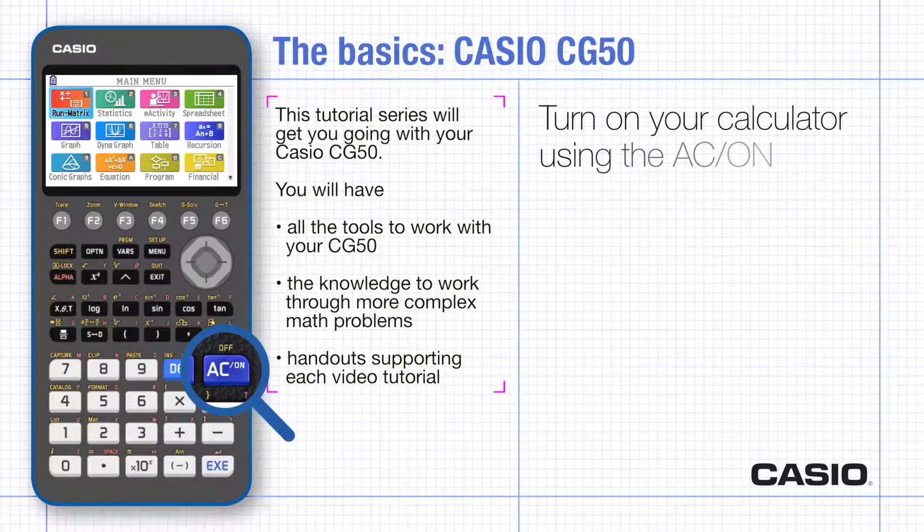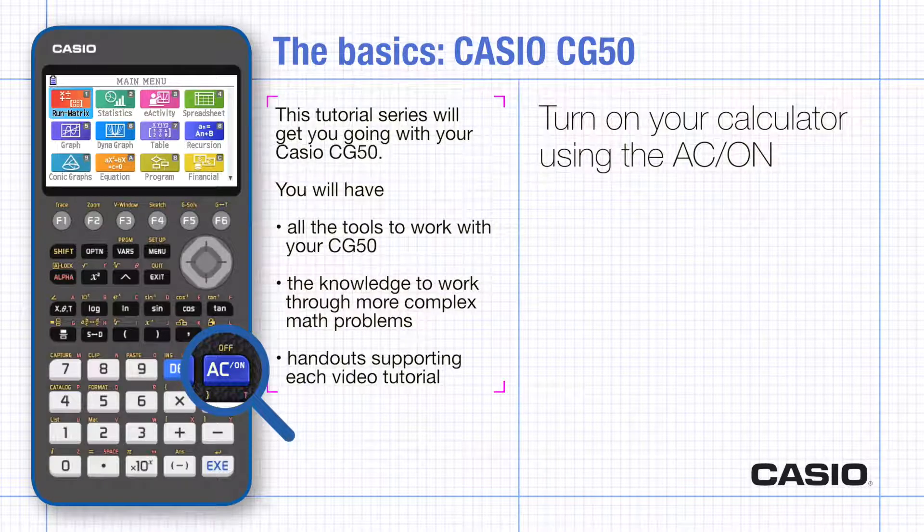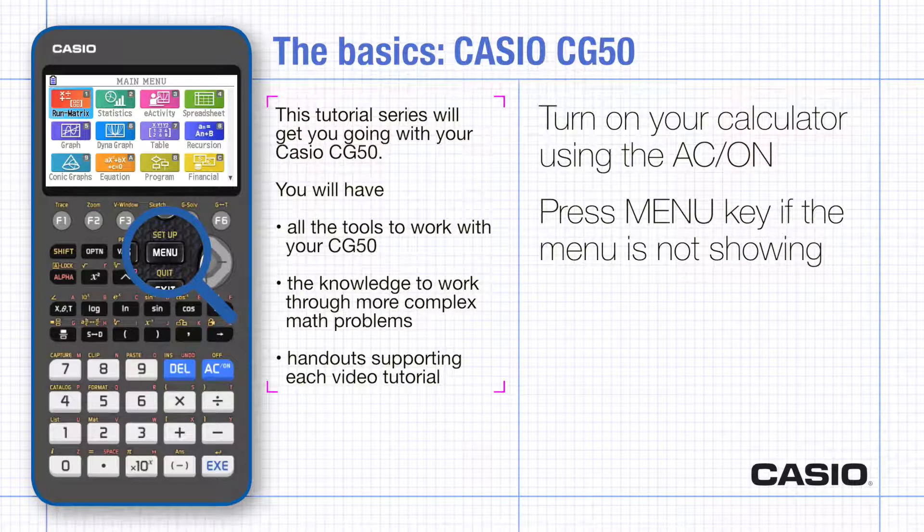Turn the calculator on using the AC on button. Your calculator will always go back to where it was before you turned it off. So press the menu key if you've not got that already showing on your screen.